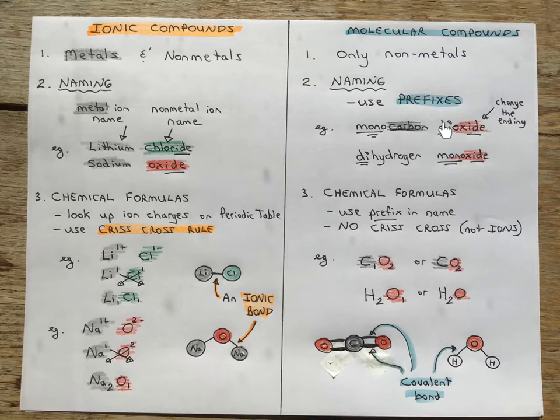Molecular compounds use prefixes. You would see the monos, the dis, and the tris. So here's monocarbon dioxide - we would commonly call that carbon dioxide. Dihydrogen monoxide is really water. We always change the endings, not of the first non-metal, but of the second one.